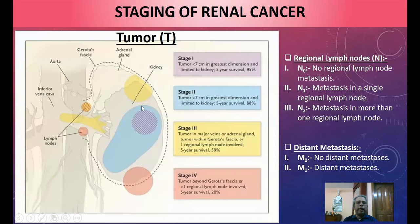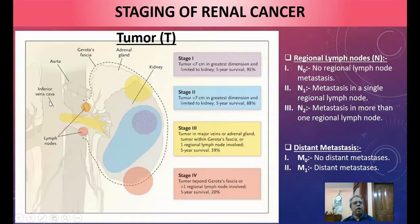Renal cell carcinoma has a tendency to migrate through the renal vein into the inferior vena cava and may even reach the heart. The tumor can enter outside Gerota's fascia, infiltrate the adrenal gland, or travel through the renal vein into the inferior vena cava and then into the heart.